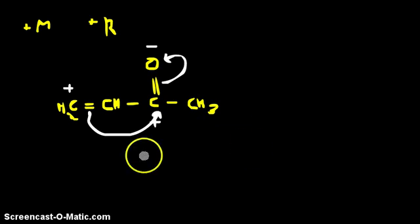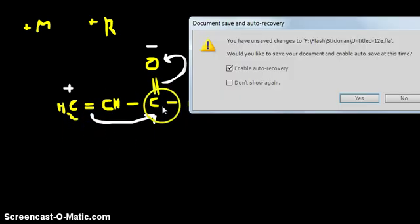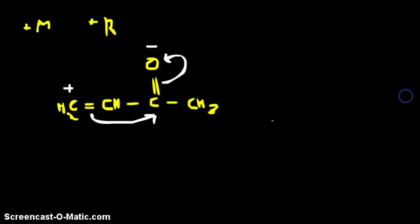So finally we have something like this, and remember there is a positive charge over here, the electrons come over here and this becomes stable. So this is basically inductive effect.